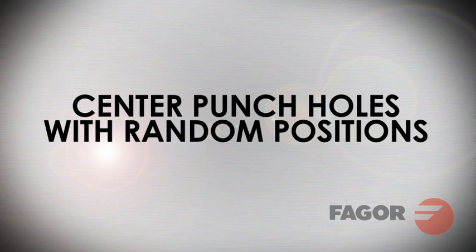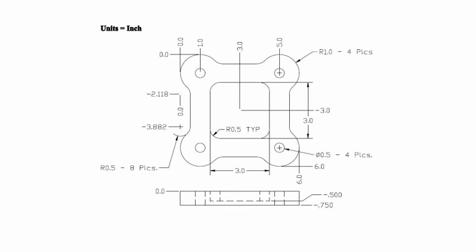We are now ready to program and machine our second operation. From our demo part print, you will see that we have four defined holes with center locations. We would also like to add a fifth hole at the center of the part as a pilot hole for our future pocket. Our tool for this operation is a half-inch diameter spot drill.